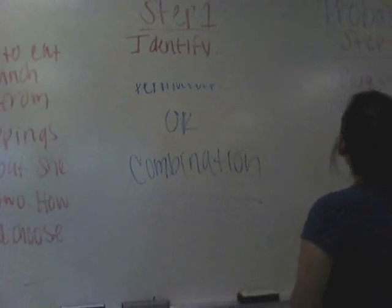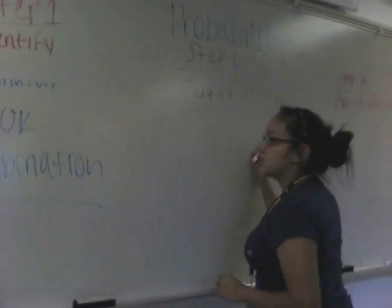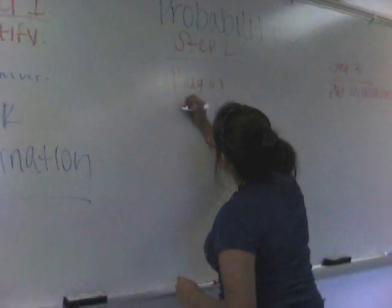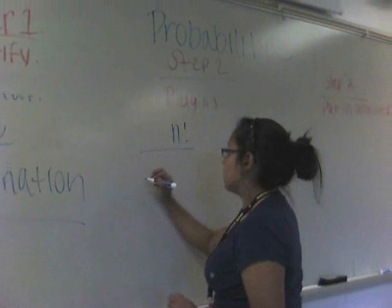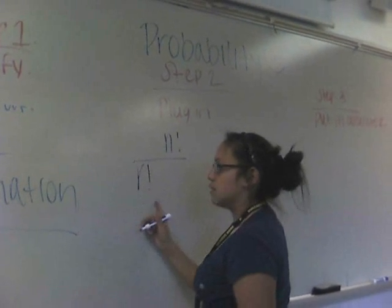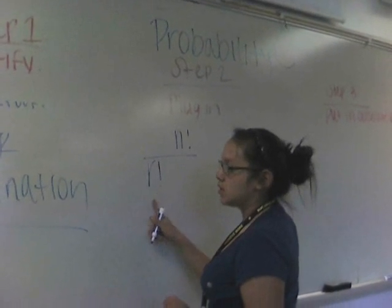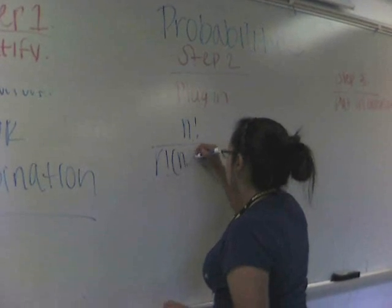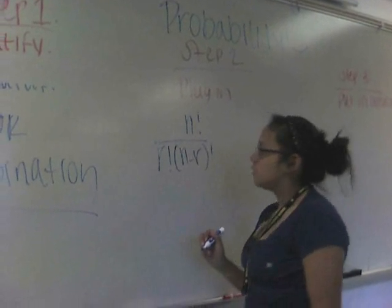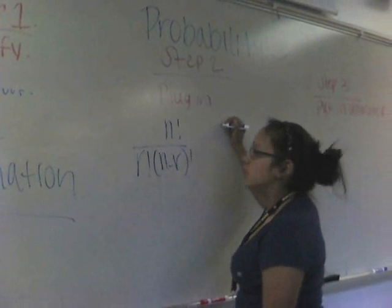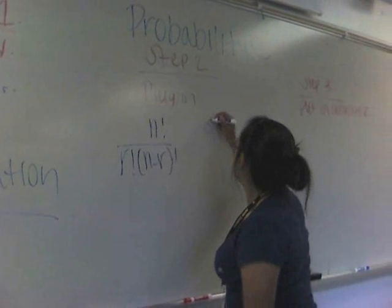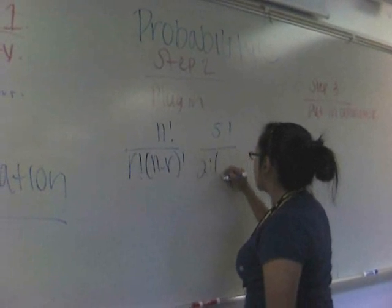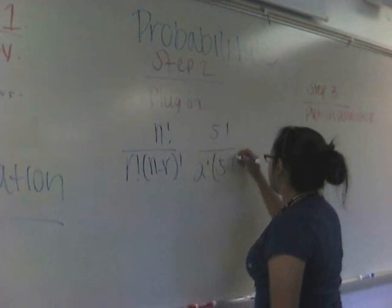The next thing to do is put it into the formula, which is n factorial over r factorial times n minus r factorial. Here, n is the total and r is how much she's going to choose from. So n would be five and r would be two, giving us five factorial over two factorial times five minus two factorial.